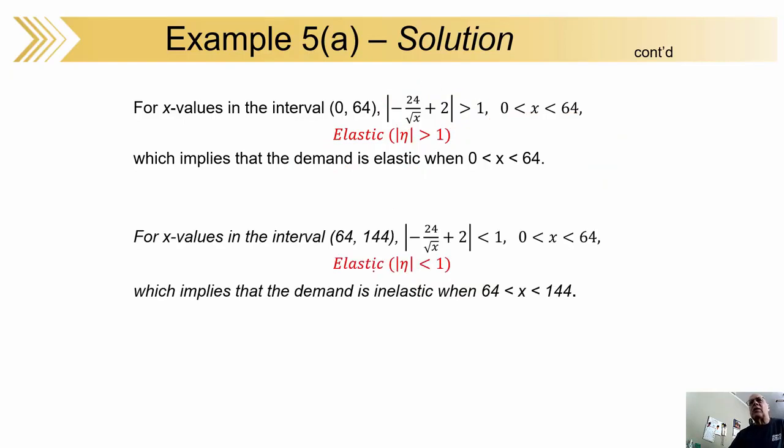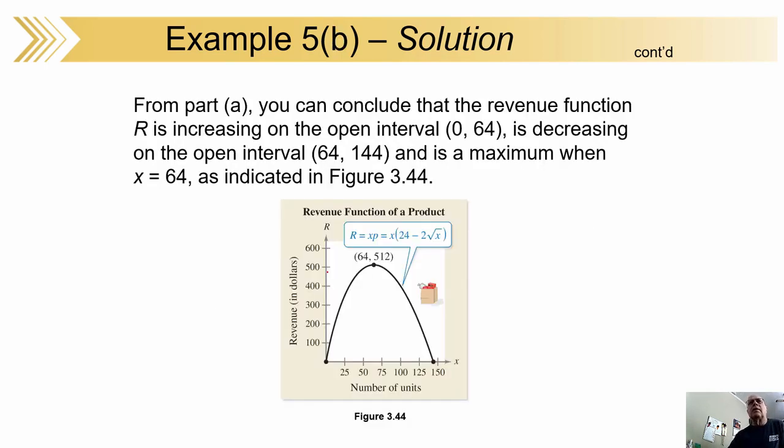There's the graph of your equation and you can see that the revenue is increasing up to 64, decreasing after 64 due to the number of units going up. The demand is going down, which changes the revenue.